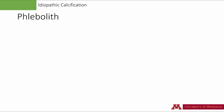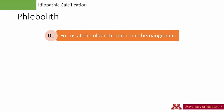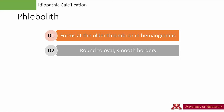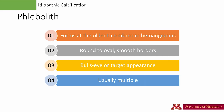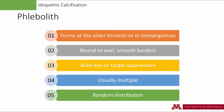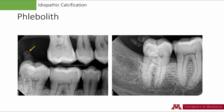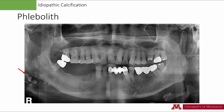A phlebolith is a calcification in an old thrombus or hemangioma. Radiographically, these are oval or circular with a smooth outer border. At the center, there is an area of increased density, giving an appearance of a bull's eye or a target. Usually these are multiple. Unlike other calcifications, phleboliths do not have any location preference — they can be in any area of the maxillofacial region. On these intraoral radiographs, you may see multiple circular radiopacities. Using one radiopacity as an example, it is circular with a smooth outer border and at the center there is an area of radiopacity — overall the appearance is similar to a bull's eye.